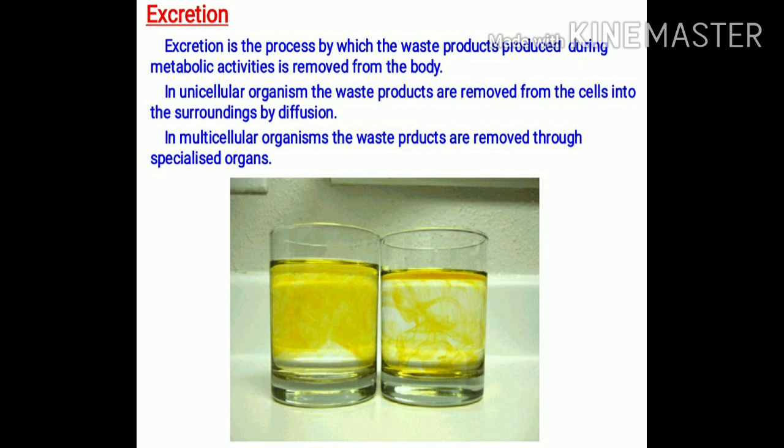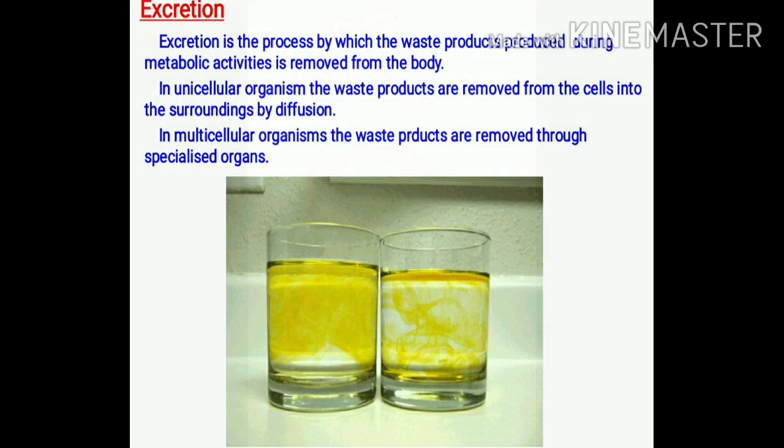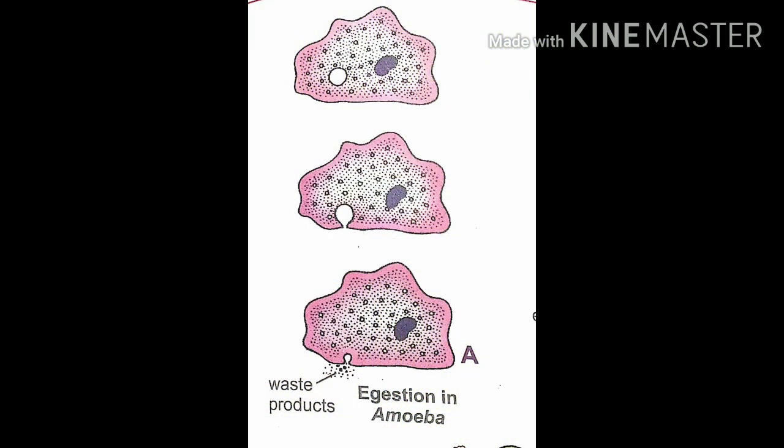Different animals have different arrangements of organs for excretion and it depends on the constitution of the animal or the body complexity of the animal. For example, in amoeba which is a unicellular organism, the waste material that is carbon dioxide is generally removed by the process of diffusion through the cell membrane. But nitrogenous waste like ammonia and excess of water are removed through contractile vacuole.